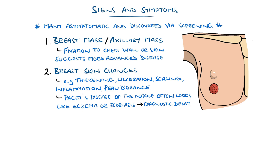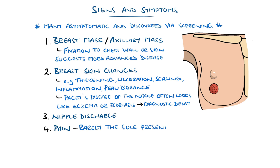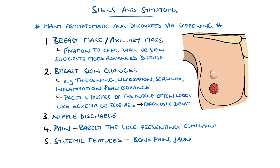Other possible findings include nipple discharge and breast pain, although breast pain is rarely the sole presenting complaint. Advanced or metastatic disease may manifest with systemic symptoms such as bone pain, jaundice, dyspnea, or pathological fractures.